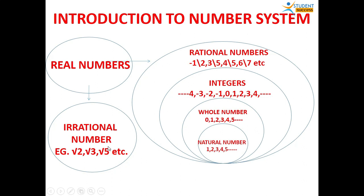Another collection is irrational numbers. You might wonder why these numbers are separate. Irrational numbers are those numbers which cannot be written in the form of P over Q. Examples include under root 2, under root 3, and under root 5 — all irrational numbers which cannot be written in the form of P over Q, as under root 2 does not belong to the category of rational numbers.